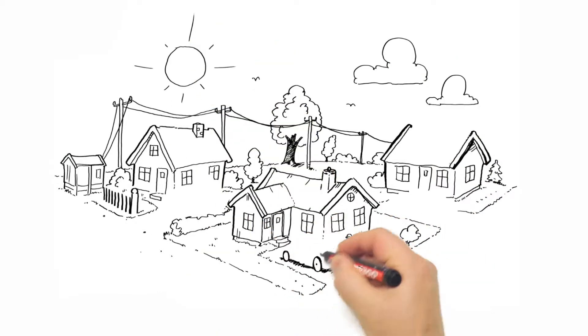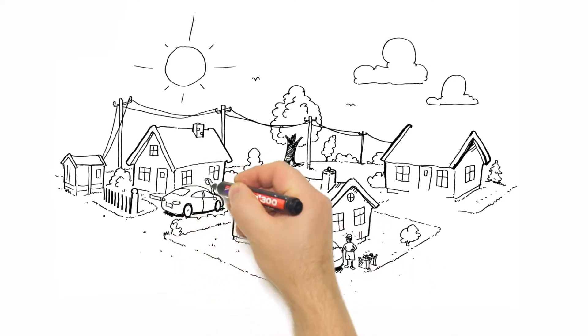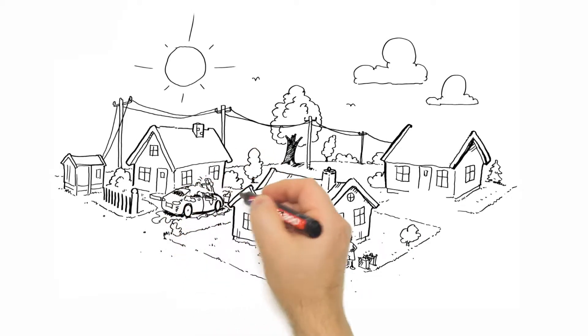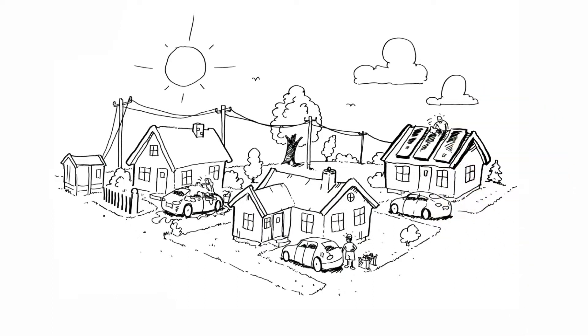And here are the neighbors. There is Mr. Hansen, who likes to travel and enjoy his life. You have Mrs. Svensson, a happy driver of her electrical car. Then there is Mr. Toivonen, the enthusiastic owner of his very own solar panel.